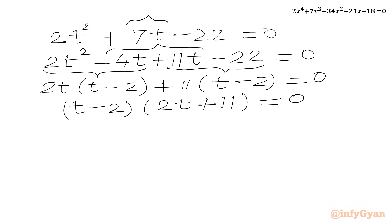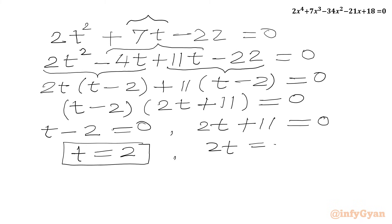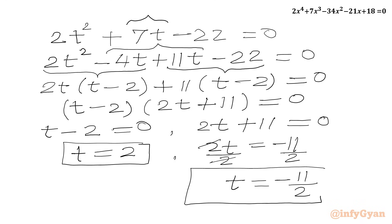Using the zero product rule: either t - 2 = 0 or 2t + 11 = 0. From the first equation, t = 2. From the second, 2t = -11, so t = -11/2.